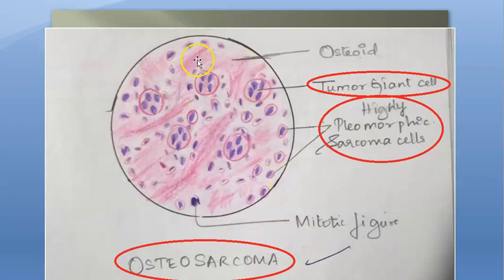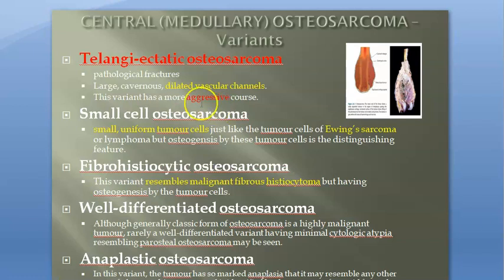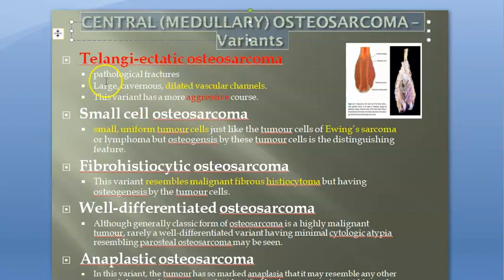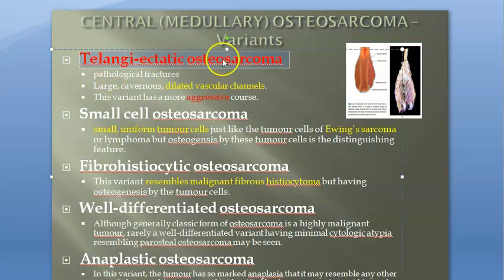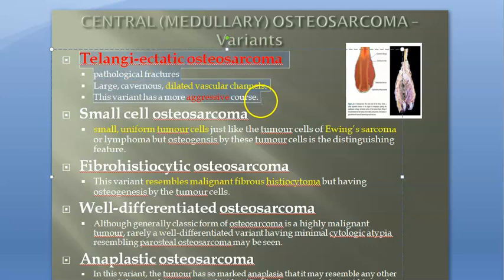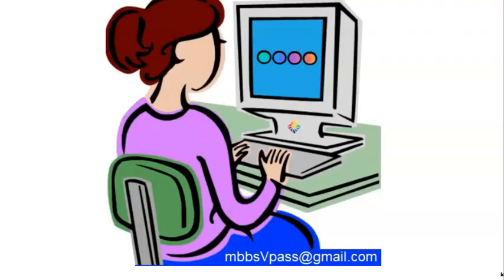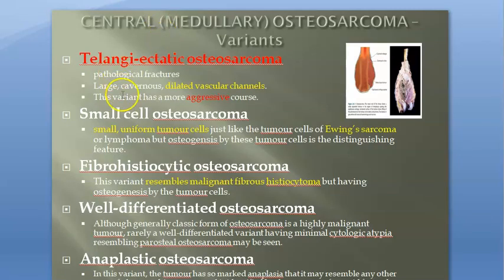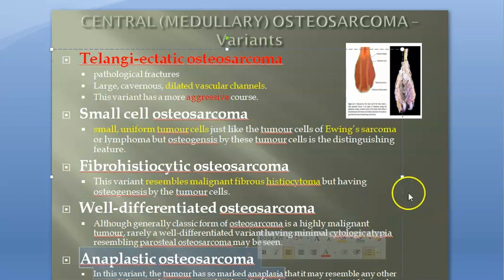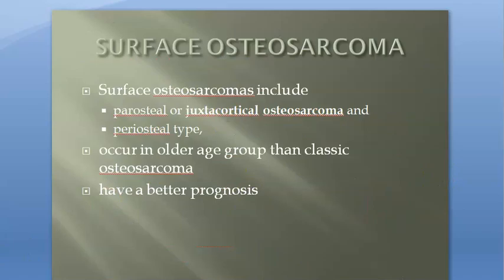In microscopy, you can see the osteoid or new bone formation, tumor giant cells, and highly pleomorphic sarcoma cells. These giant cells will show atypical mitosis and hyperchromasia. Coming to the variants of the classic central or medullary osteosarcoma: the telangiectatic osteosarcoma is the most aggressive because it has dilated vascular channels giving it an excessive blood supply. There is also small cell osteosarcoma, fibrohistiocytic osteosarcoma, well-differentiated osteosarcoma, and anaplastic osteosarcoma.